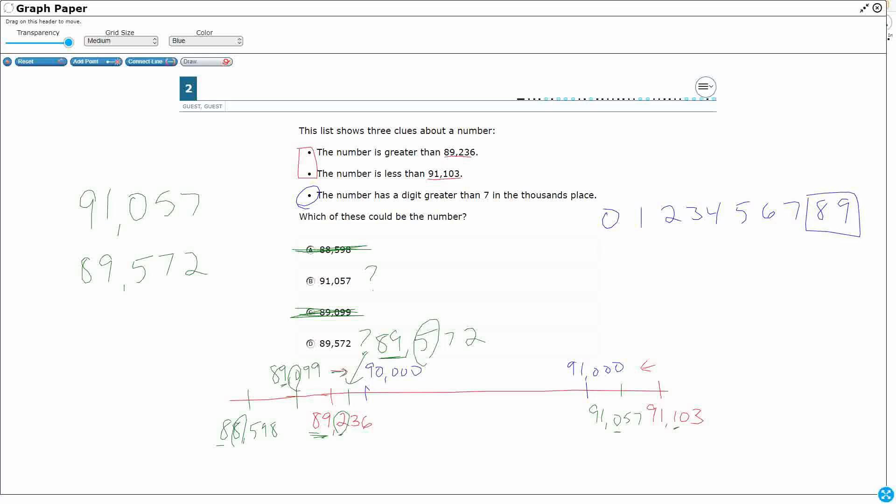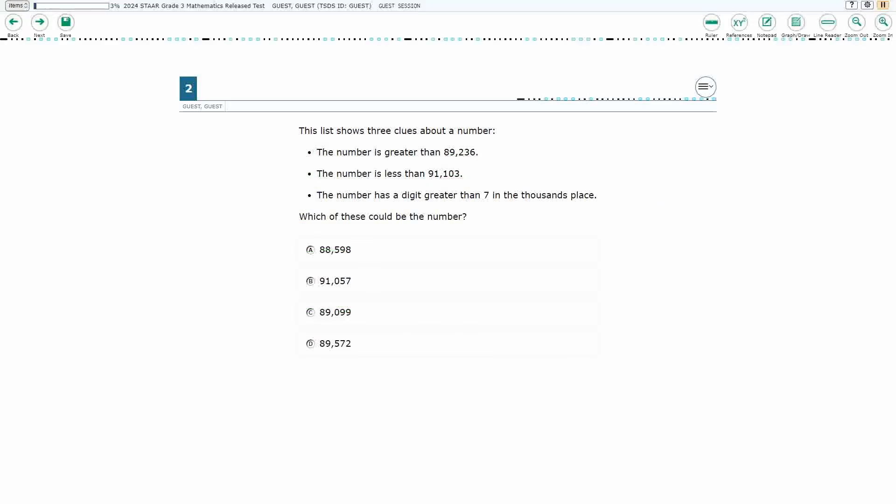So I need to look in the thousands place. So hopefully, if I want to draw a quick place value chart here, I've got my 1s, my 10s, my 100s. And then here's my thousands place. And which number has a digit greater than 7? It's going to be that 89,000. So that is my answer, D.